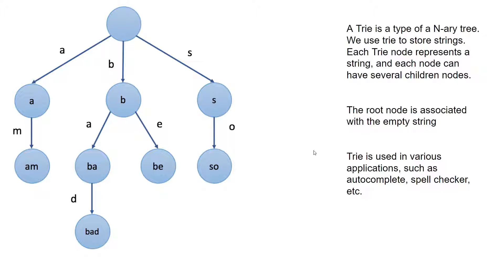In this video we're going to look at a data structure called Trie. A Trie is a type of N-ary tree, so unlike a binary tree where each node can have a maximum of two children, an N-ary tree can have multiple children. We use Trie to store strings, and each Trie node represents a string. Each node in the Trie can have multiple children. The root node is always empty.